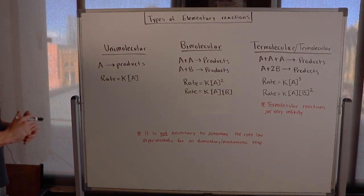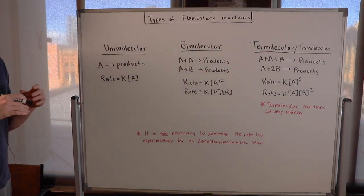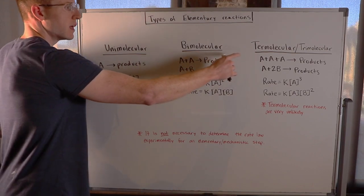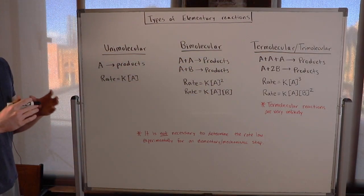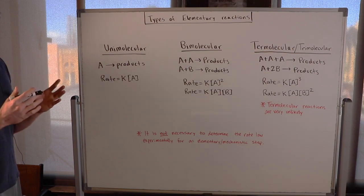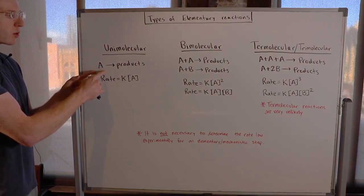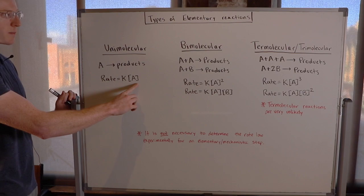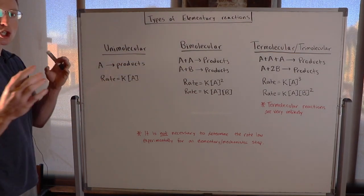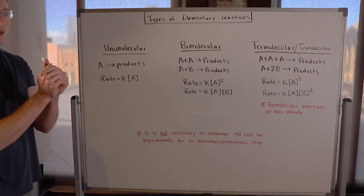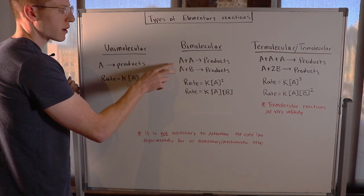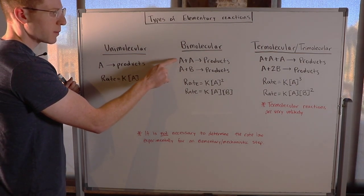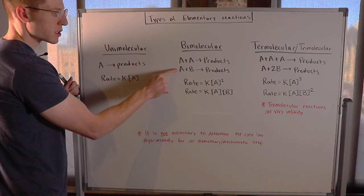To conclude, let's go through the types of elementary or mechanistic reactions. There are unimolecular, bimolecular, and termolecular (or trimolecular) elementary reactions. In a unimolecular reaction, one molecule turns into products, with its corresponding rate law. In a bimolecular reaction, two molecules must collide in the correct orientation with enough kinetic energy to make products. There are two general examples: A + A → products, with rate law K times concentration of A squared, and A + B → products, with rate law K times concentration of A times concentration of B.